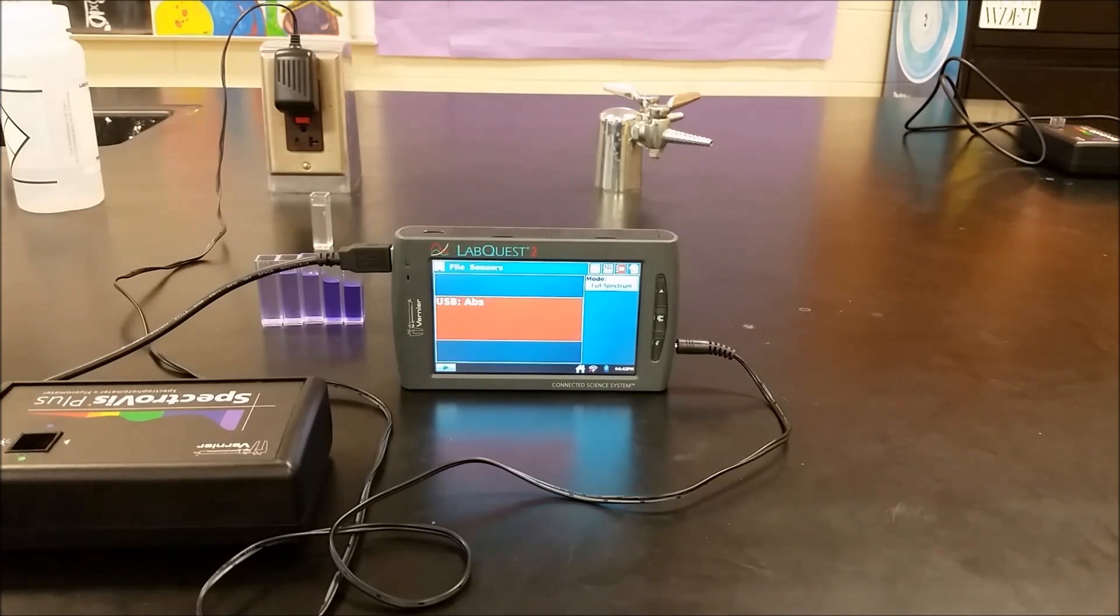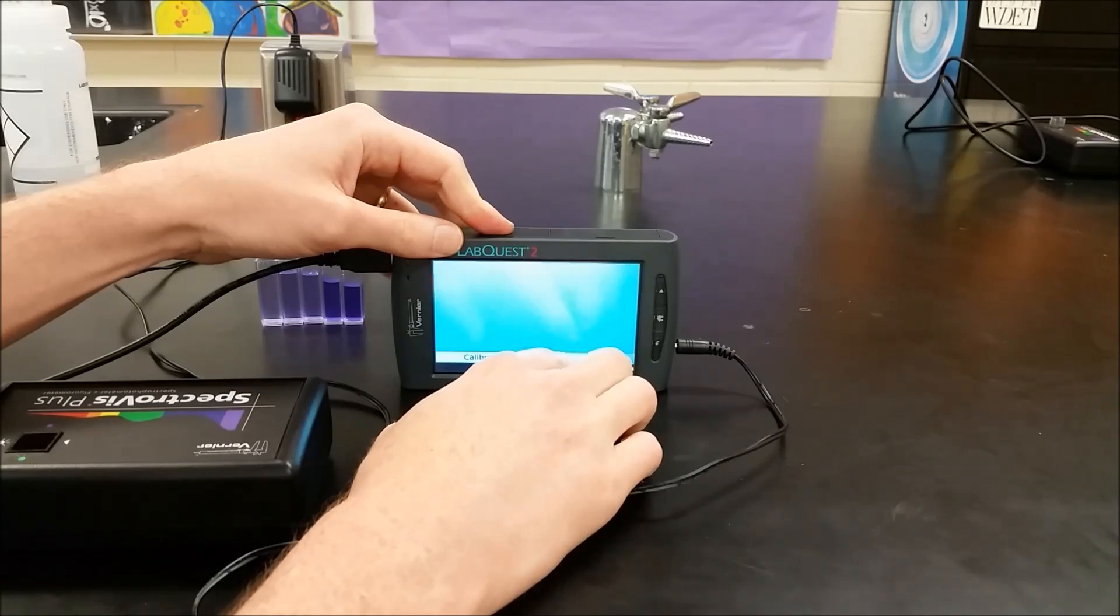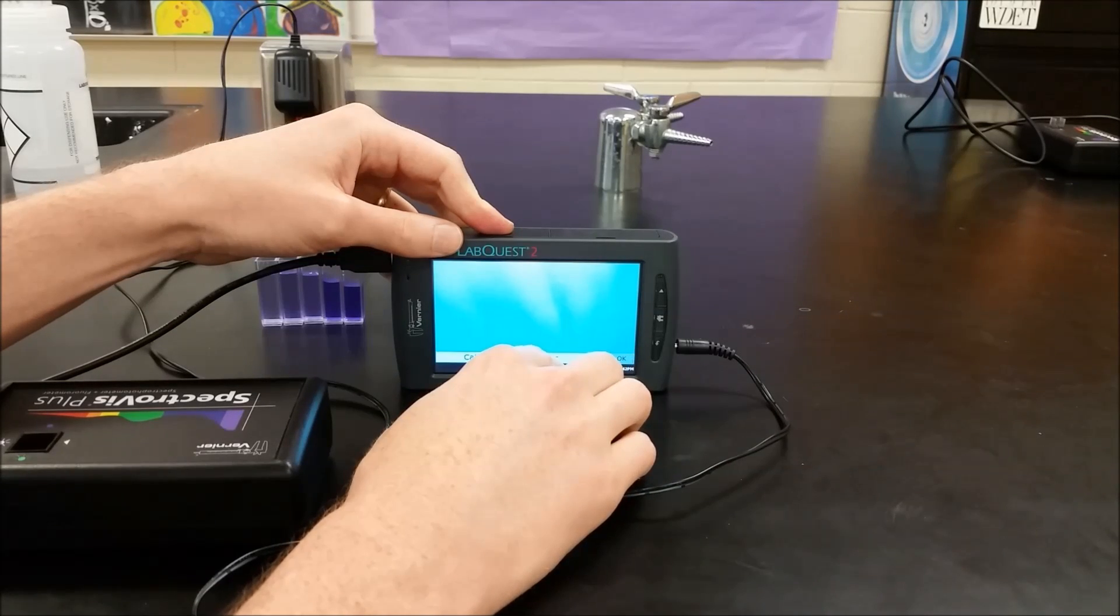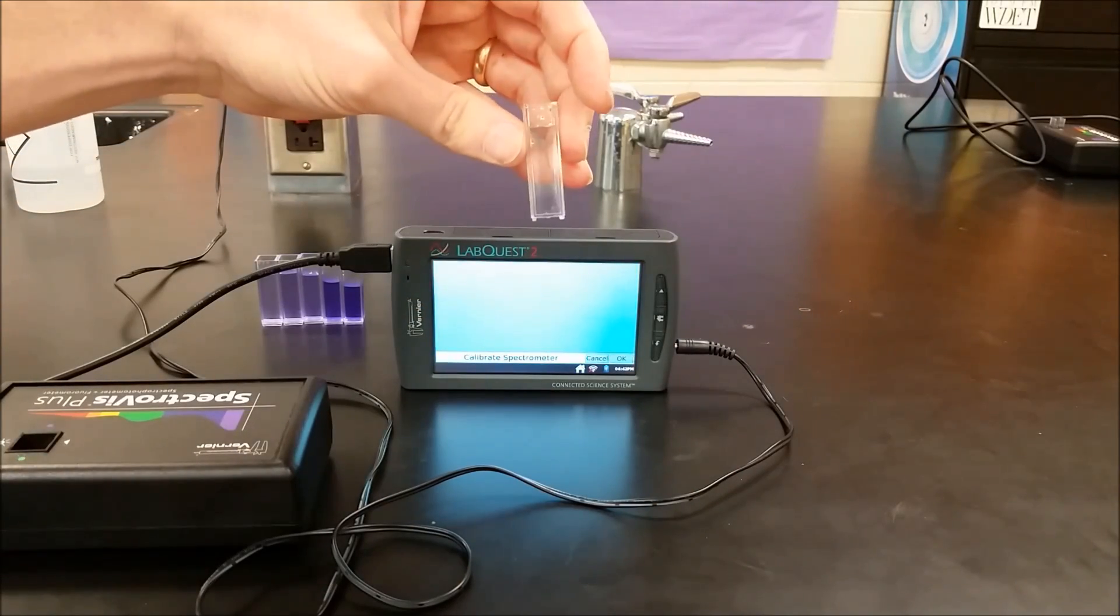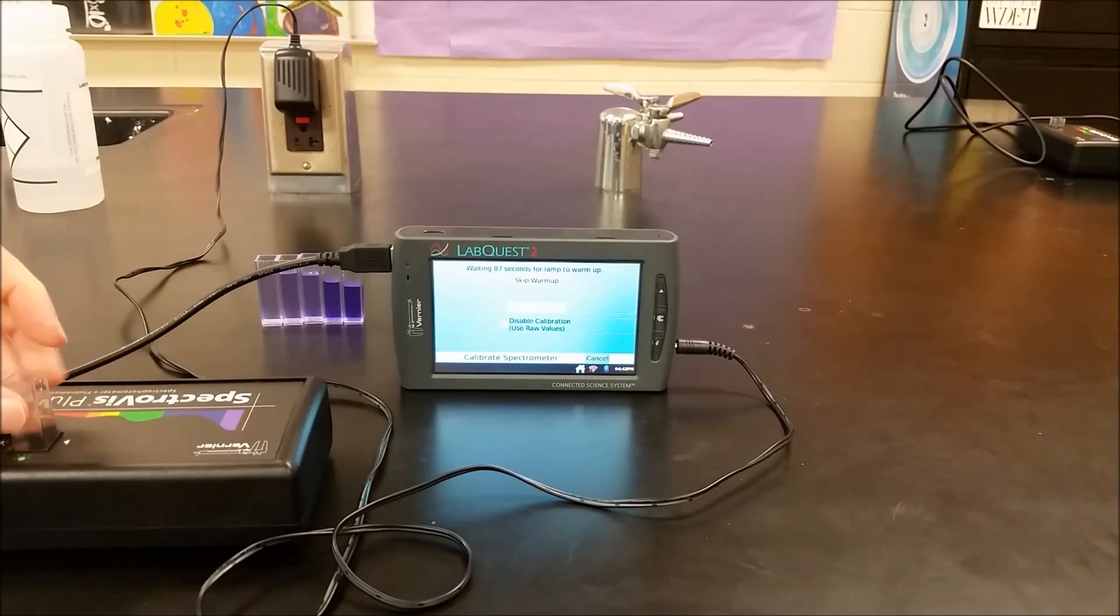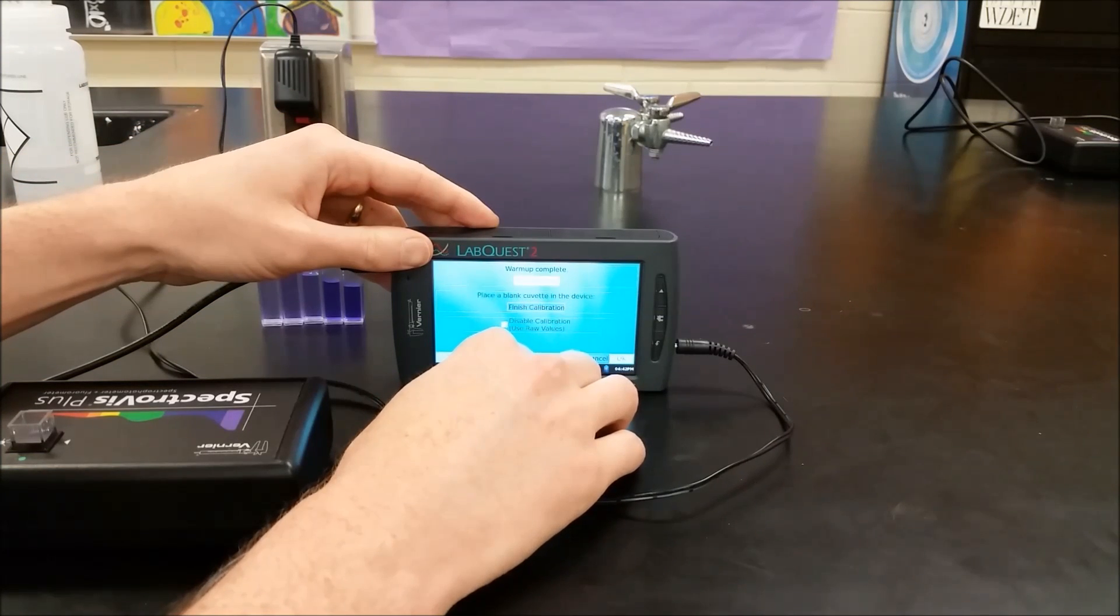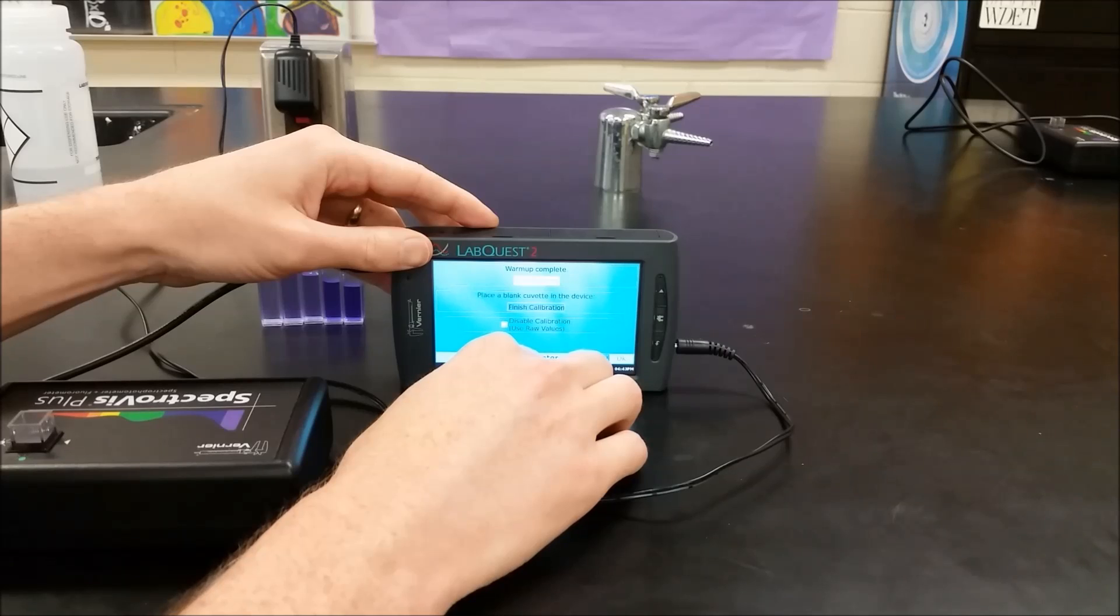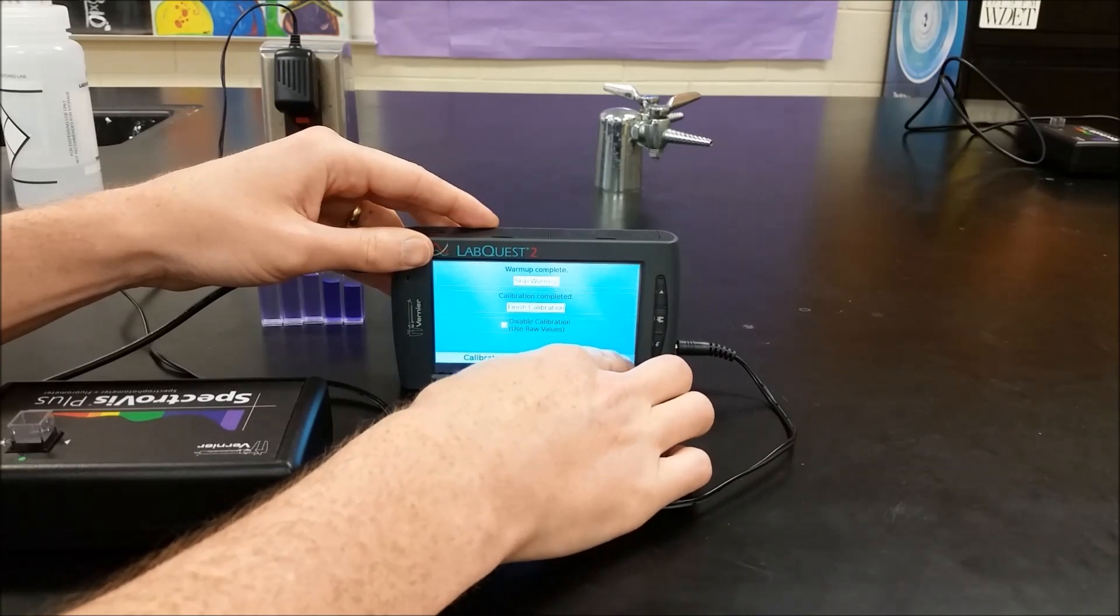We're going to use the LabQuest 2 to plot them. Before we do that, we should calibrate. If you go under sensors and calibrate and select your spectrophotometer, it will bring up a thing. You can take a cuvette of distilled water. You want to take the side that's not the wet side, of course, and put the clear plastic side through there. And this is already warmed up for quite a bit, and so we're just going to click on Finish Calibration. And that's going to take our baseline and set it to zero for all the different wavelengths.